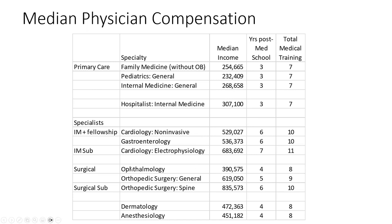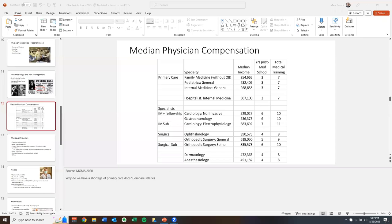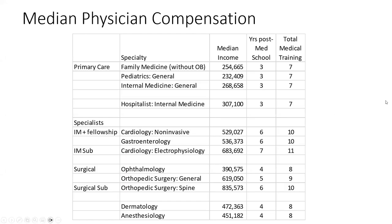In the big-money specialties: a cardiologist does four years of medical school, three years of internal medicine residency, and three years of cardiology fellowship — six years post-medical school, ten total — and earns a median of $529,000. Orthopedic surgeons earn a median of $619,000, but if you specialize in spine, that's $835,000.